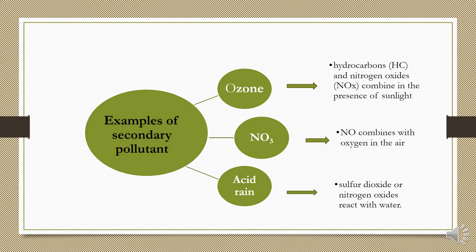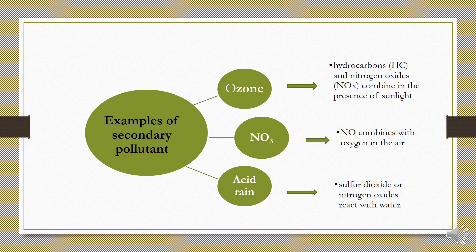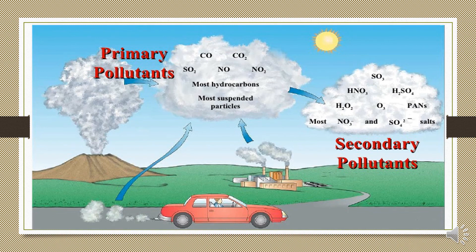Examples of secondary pollutants include ozone, nitrogen dioxide, and acid rain. Ozone is a secondary pollutant formed by a combination of hydrocarbons and nitrogen oxides (NOx) in the presence of sunlight. Nitrogen dioxide is also a secondary pollutant, formed when nitric oxide combines with oxygen in the air. Acid rain is formed by the combination of sulfur dioxide or nitrogen oxides with water.